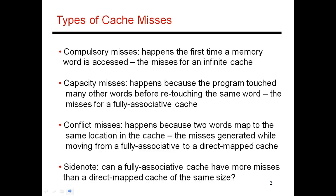There are different kinds of cache misses, and they're usually referred to as the three C's: the compulsory misses, the capacity misses, and the conflict misses.